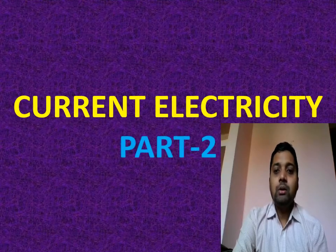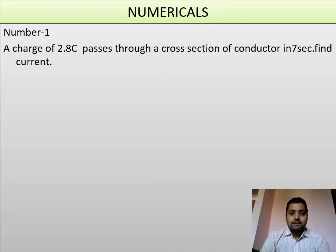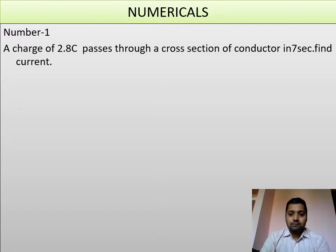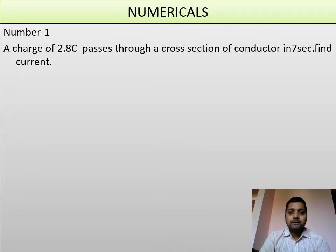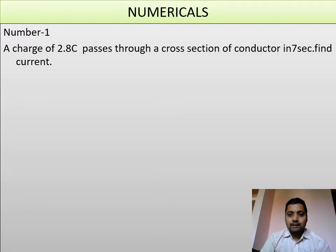The first numerical problem: a charge of 2.8 coulombs passes through a cross section of a conductor in 7 seconds — find the current. From the first video, we have the relation I = Q/T (current equals charge divided by time). To solve a numerical problem, the process is: first write the data given, second write the formula, third do the calculation, and fourth get the answer.